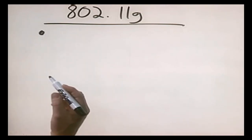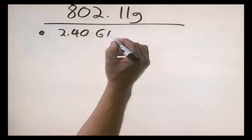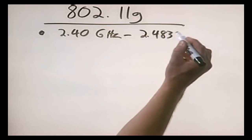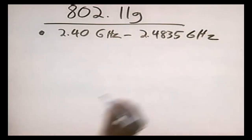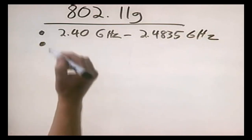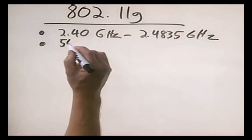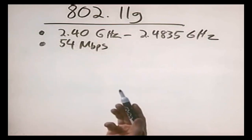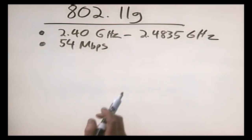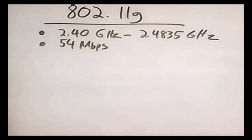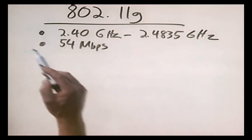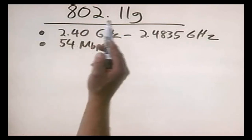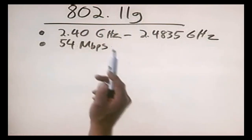Like 802.11b, 802.11g uses the 2.40 gigahertz to 2.4835 gigahertz frequency range. However, instead of running at 11 megabits per second, it runs at 54 megabits per second — still not as fast as a wired Fast Ethernet network at 100 megabits per second, but much better than 11 megabits. This speed is a theoretical maximum and can be heavily impacted by interference.